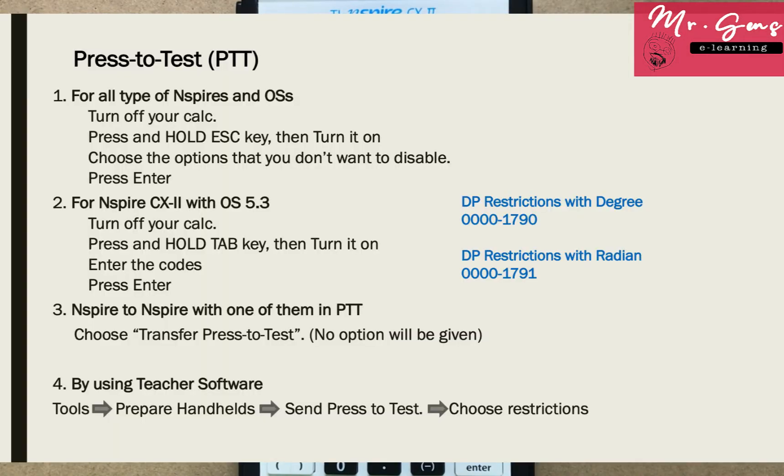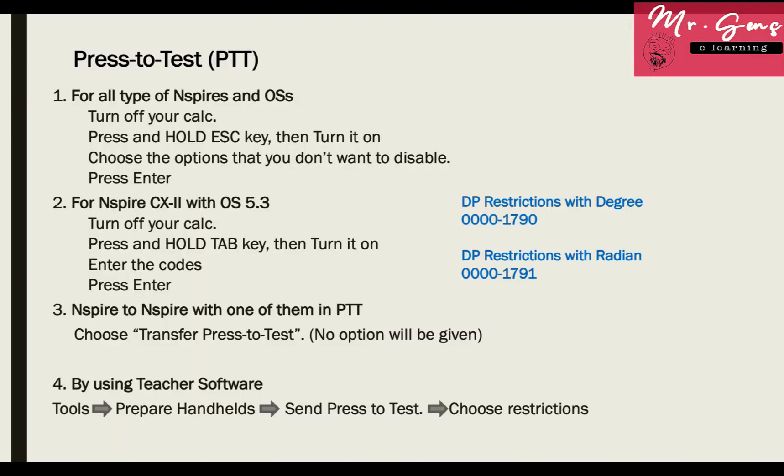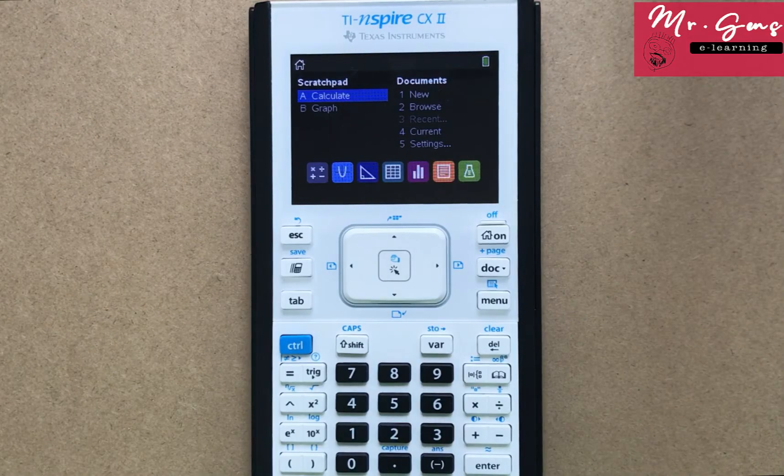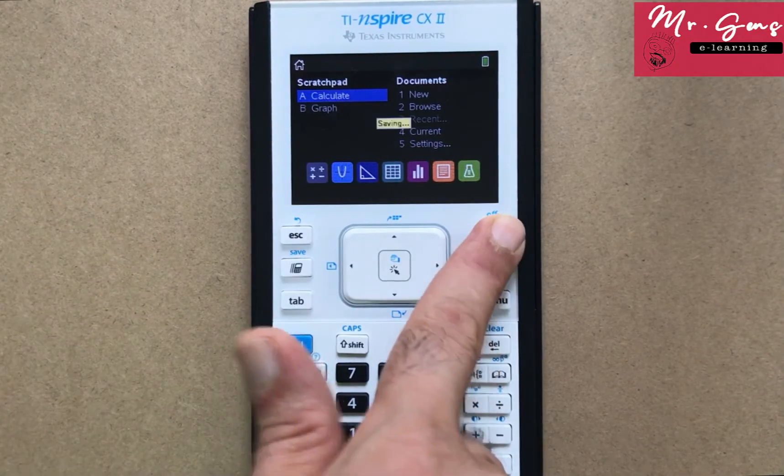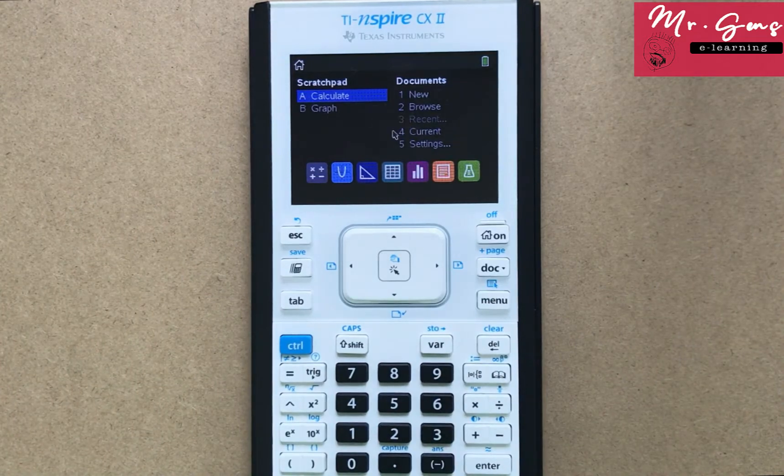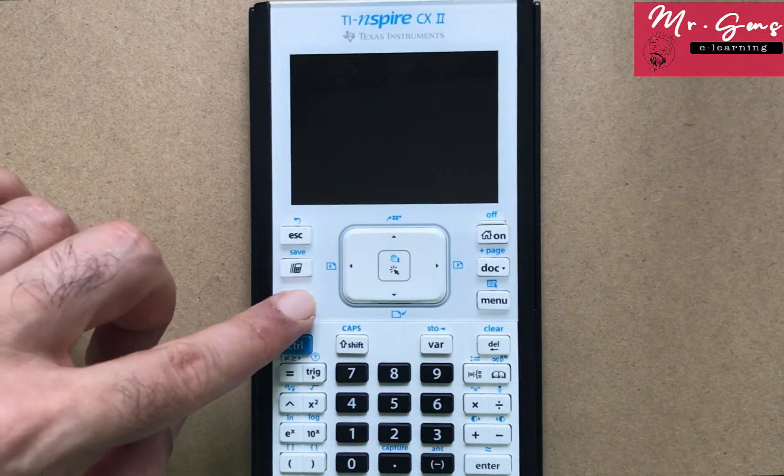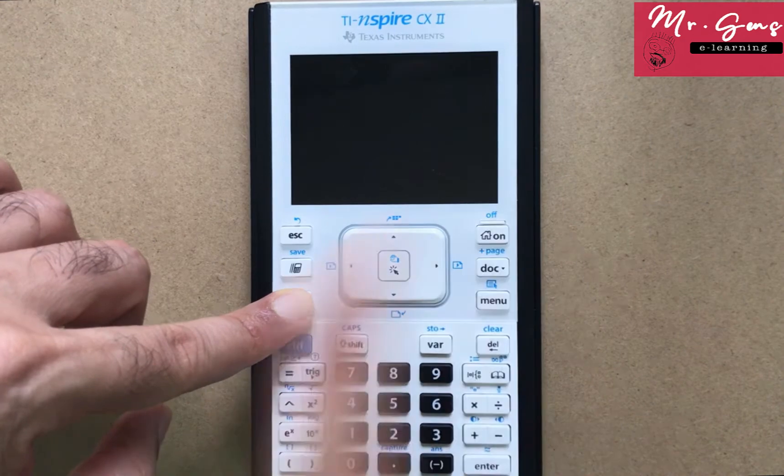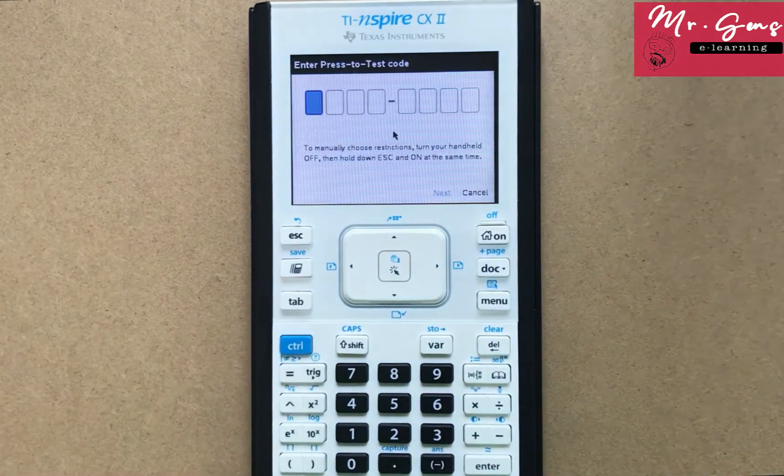The second method is quite new. It only works with Nspire CX2 calculators with operating system 5.3. It's similar to the other method. Turn off your calculator first. This time press tab, hold it and turn it on. And you'll see this screen.